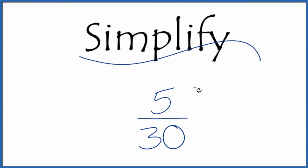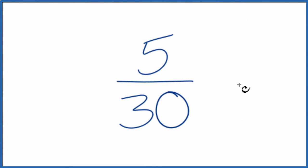If you need to simplify the fraction 5 thirtieths, here's how we do it. We're going to find an equivalent fraction to 5 thirtieths that's been reduced to its simplest terms.